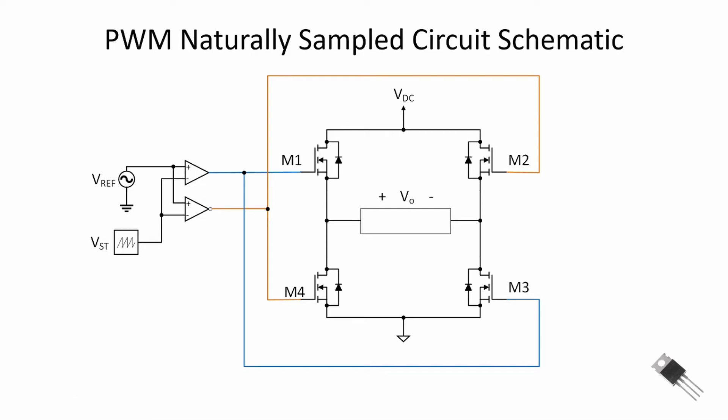Here's the circuit schematic for a naturally sampled PWM inverter. One thing you'll notice is that M1 and M3 fire together — turn on together — and M2 and M4 will also turn on together. M1 and M4 are a complementary pair with complementary logic, so M1 and M4 will not be turned on at the same time. Likewise, M2 and M3 will not be turned on at the same time. We have a reference signal that we compare against a carrier signal.